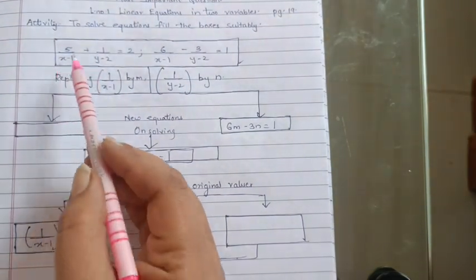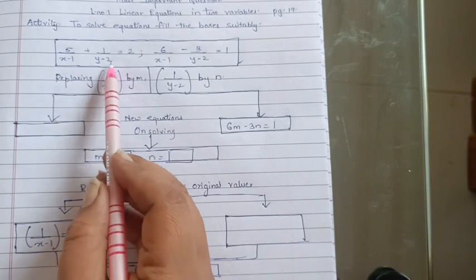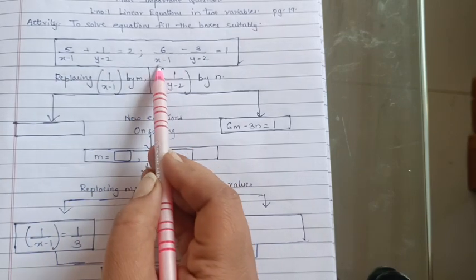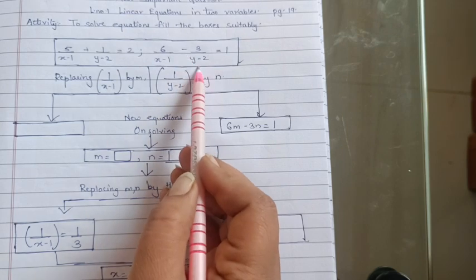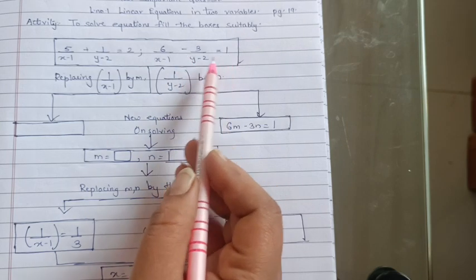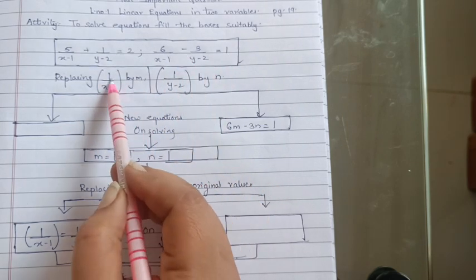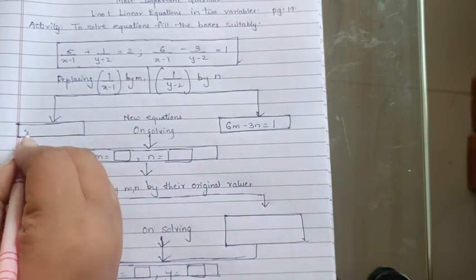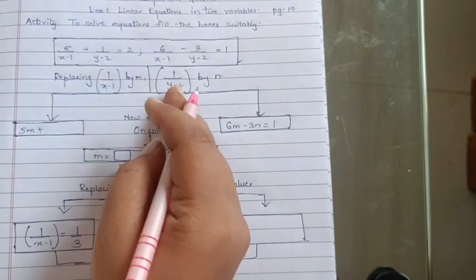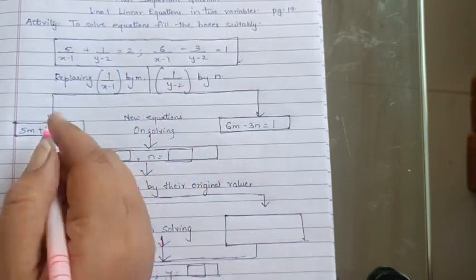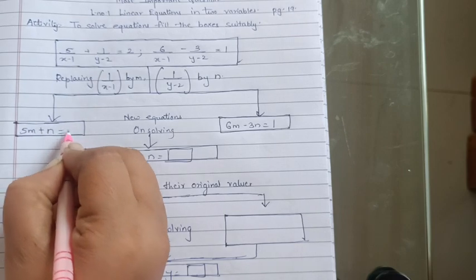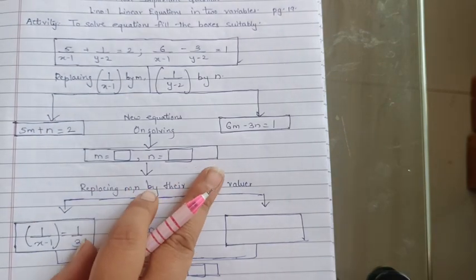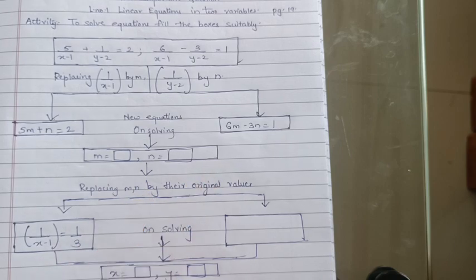The first equation is 5/(x−1) + 1/(y−2) = 2, and the second is 6/(x−1) − 3/(y−2) = 1. You have to replace 1/(x−1) by m and 1/(y−2) by n. So the first equation becomes 5m + n = 2, and the second equation is 6m − 3n = 1.